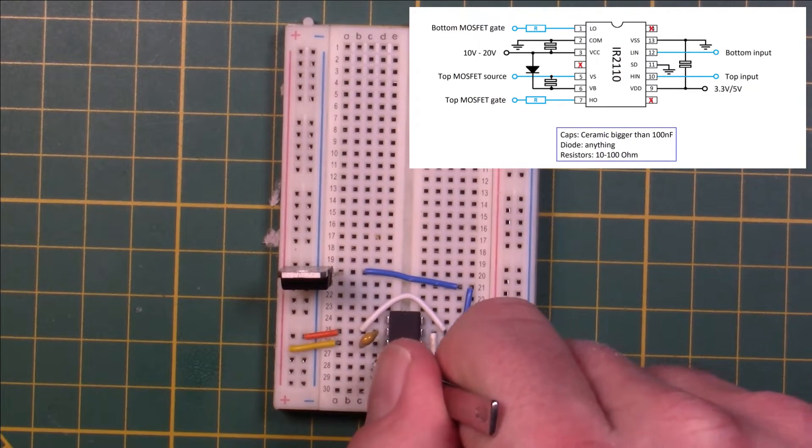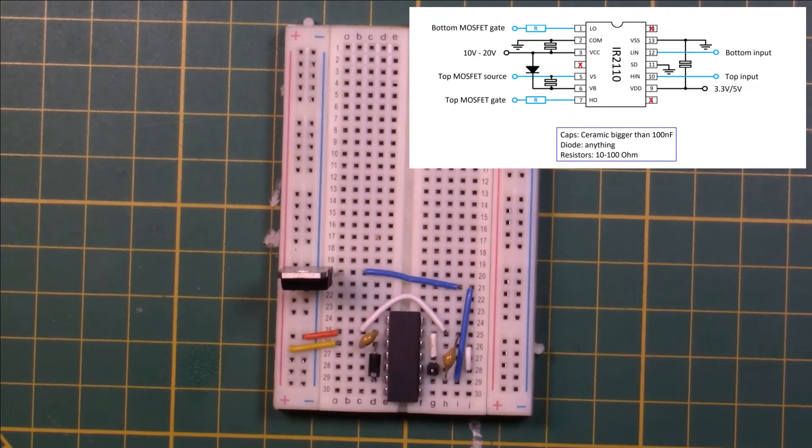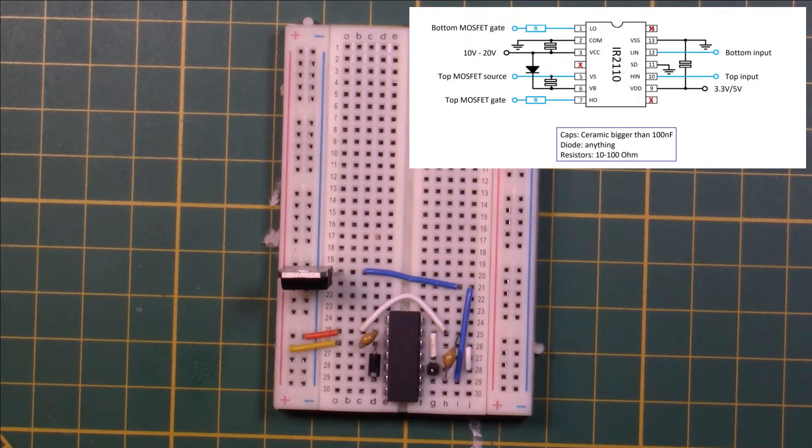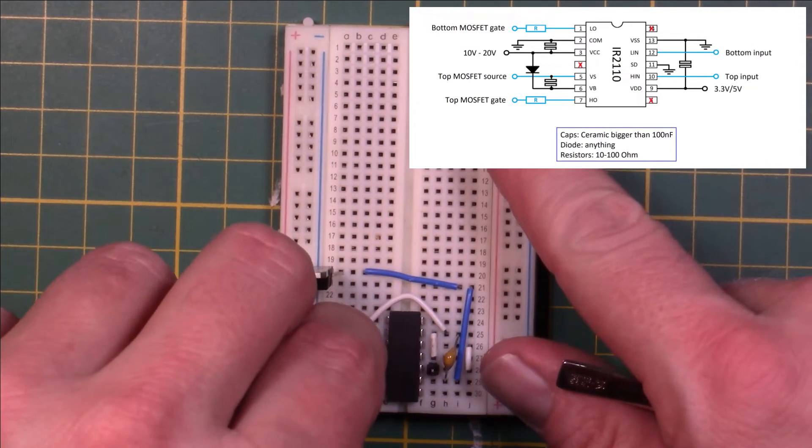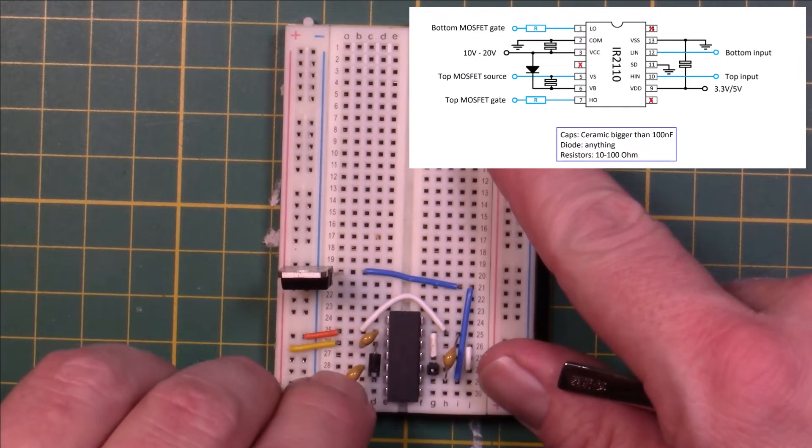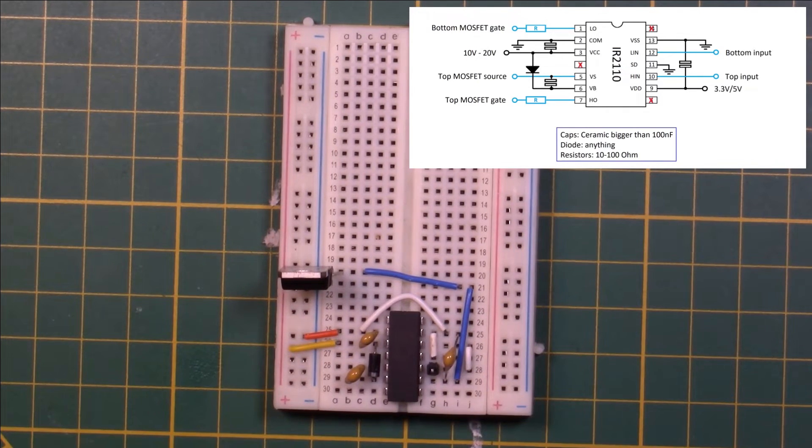Next a generic diode from pin 3 to pin 6 to charge the bootstrap capacitor there. Then the bootstrap capacitor I just mentioned, and it provides a floating power supply to drive the high side MOSFET gate. It has its other end connected to the high side MOSFET's source.